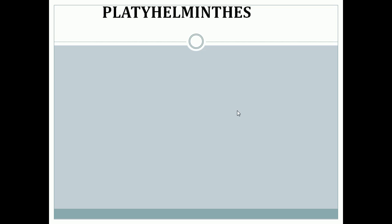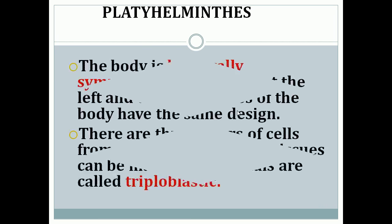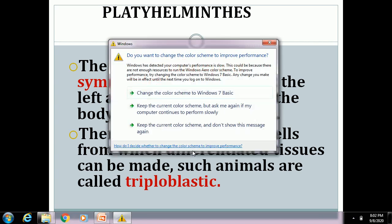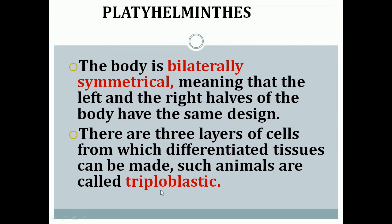The next classification is Platyhelminthes. The body of these organisms is bilaterally symmetrical — meaning the left and right halves of the body have the same design. They contain three layers of cells differentiated into tissues, so these animals are called triploblastic — 'triplo' meaning three layers.